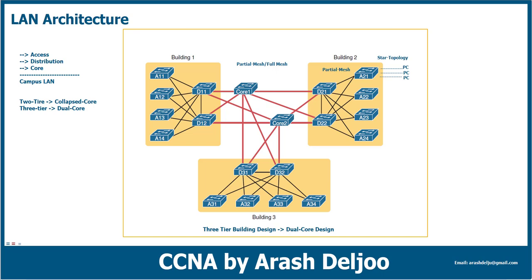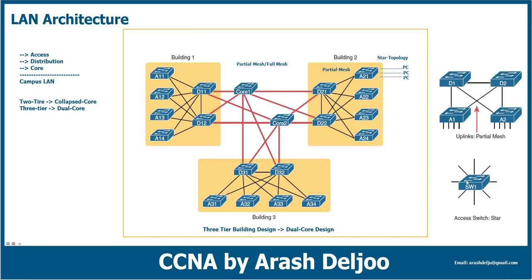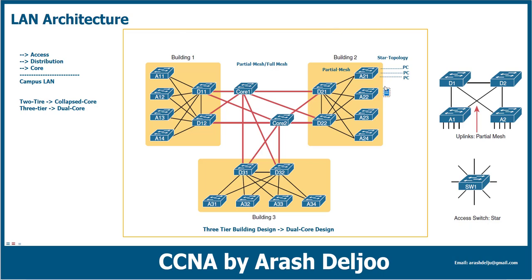To summarize: in the access layer switch we use star topology, and between the access layer and distribution layer we use partial mesh topology. In some references, because the access layer switch uses star topology on one side and partial mesh on the other, you will see the term hybrid topology. This means the access layer switch operates in a hybrid topology.